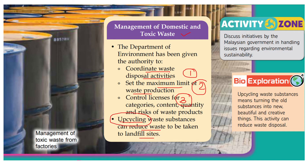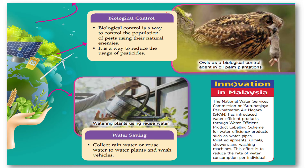Upcycling means turning waste substances into new, beautiful, and creative things. Most importantly, this activity can reduce waste disposal. Moving on is biological control, which is a way to control pest populations using their natural enemies. This is very important to reduce the usage of pesticides.